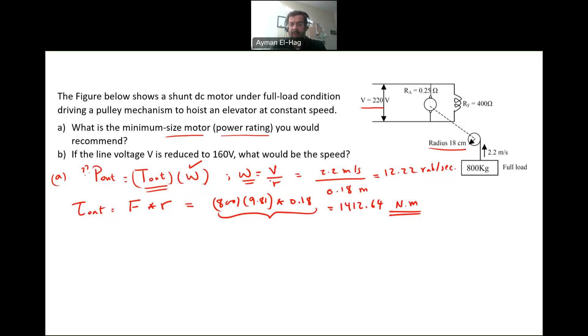Now, from this torque, we can find the output power. So P out is equal to this torque, which is 1412.64 times the omega, 12.22, and this will give me 17,265.6 watt. When you want to size your motor, or you want to buy a motor that can do this load, then this is the size of the motor that you are looking for.